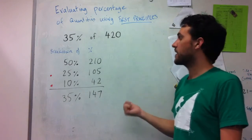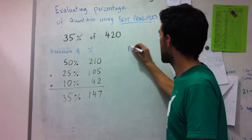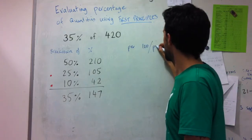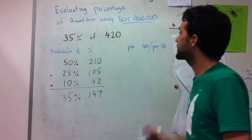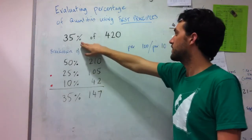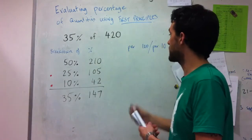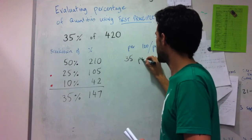The alternative method is to look at per 100 or per 10. So with this method what I tend to do is I think okay, it's 35% of 420. This means that I'm taking 35 per 100.